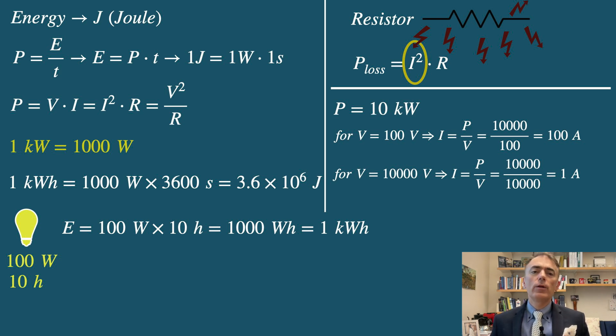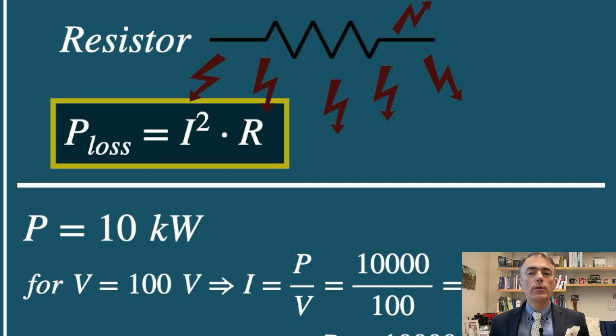So for a given power that you want to transmit, lower current dramatically reduces the power loss as heat, as P loss equals I squared R.